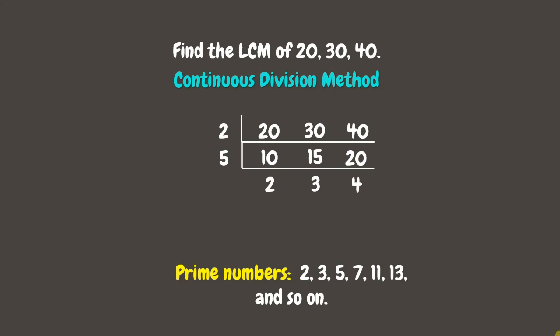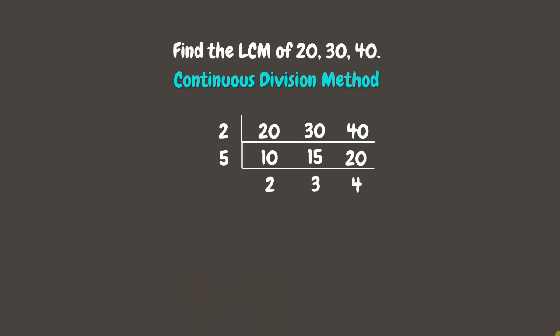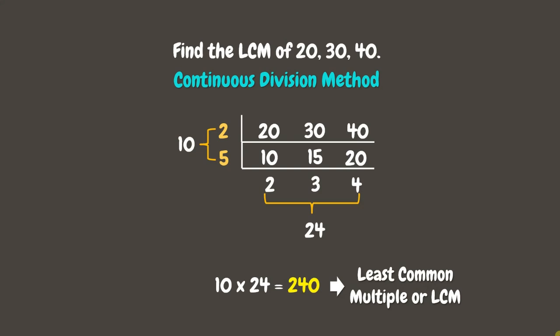At this point, we can no longer divide by any more prime numbers. Now, to find the LCM, we'll multiply the common prime factors and the remaining quotients. For the common prime factors, we have 2 times 5, which is 10. For the remaining quotients, we have 2 times 3 times 4, which is 24. Now let's multiply these products: 10 times 24, which is 240. Therefore, 240 is the least common multiple of 20, 30, and 40.